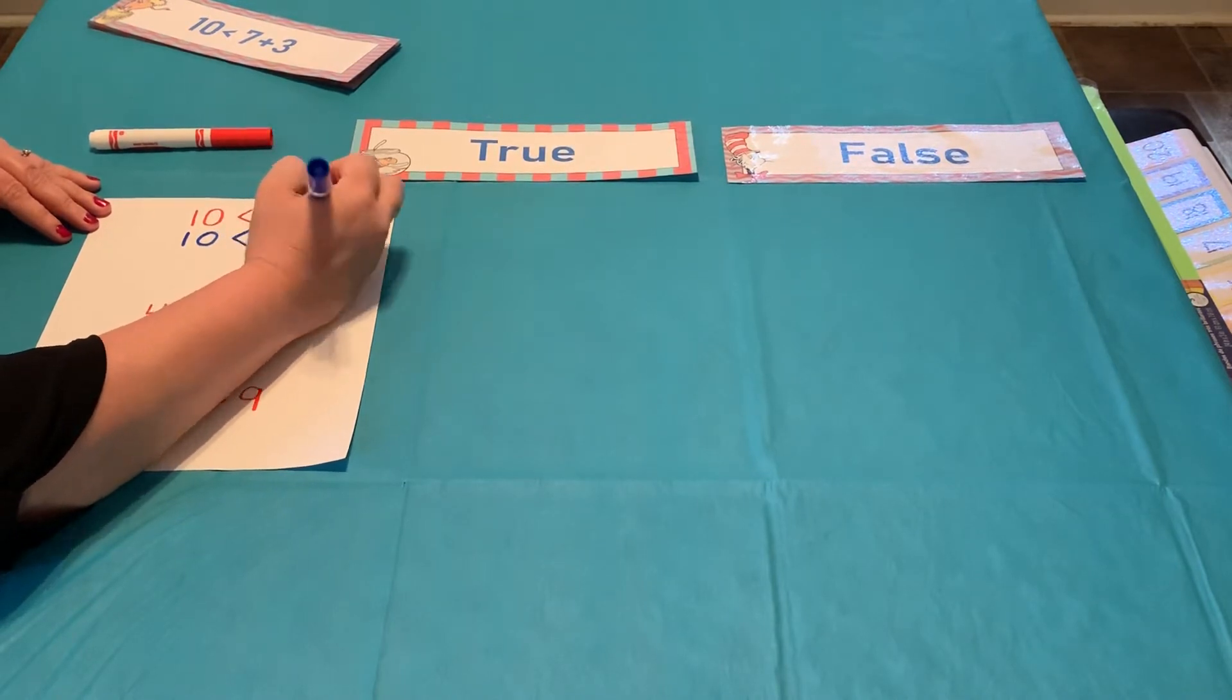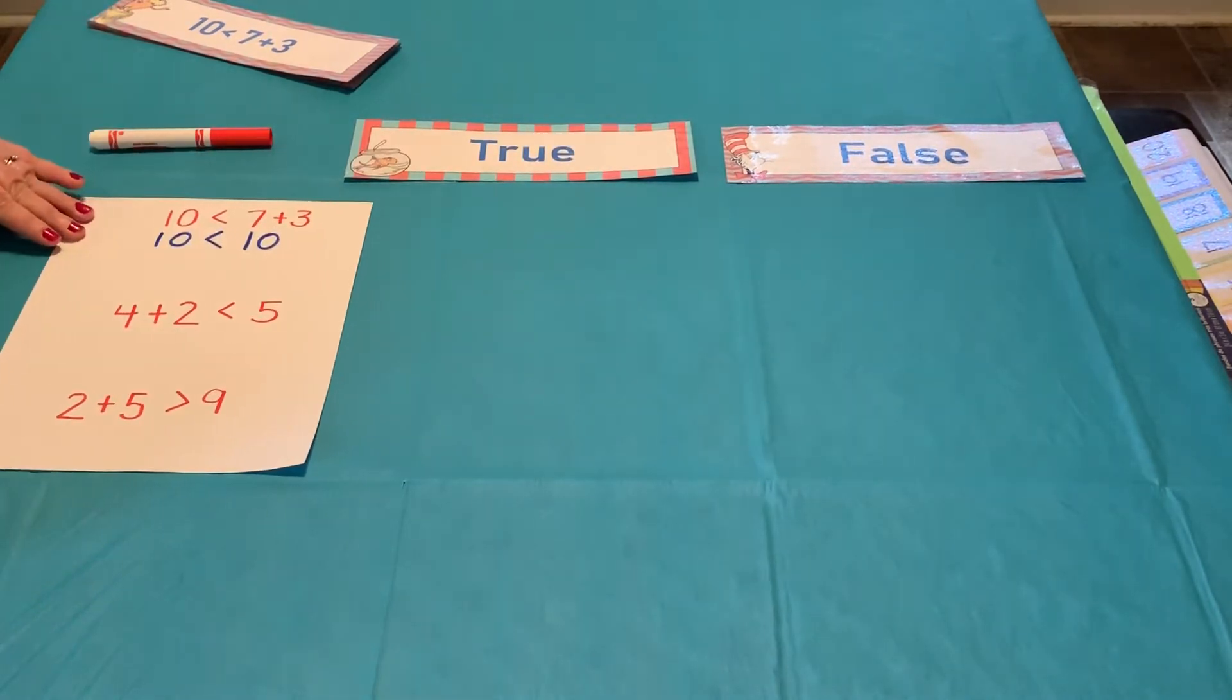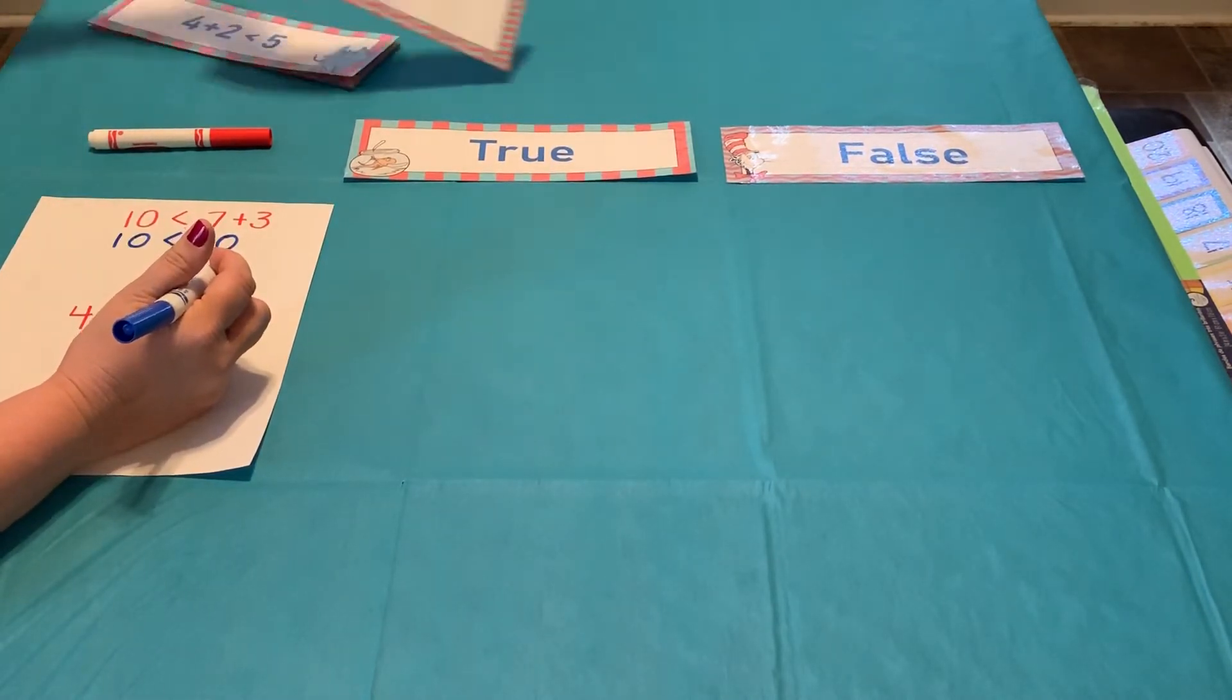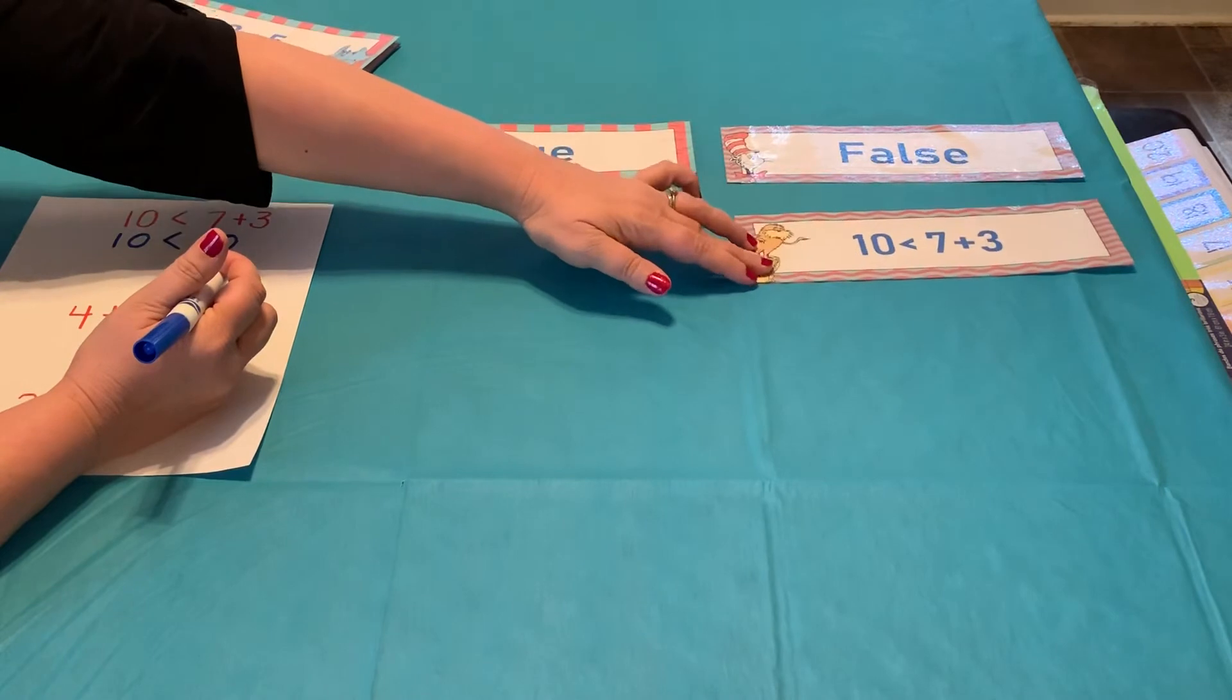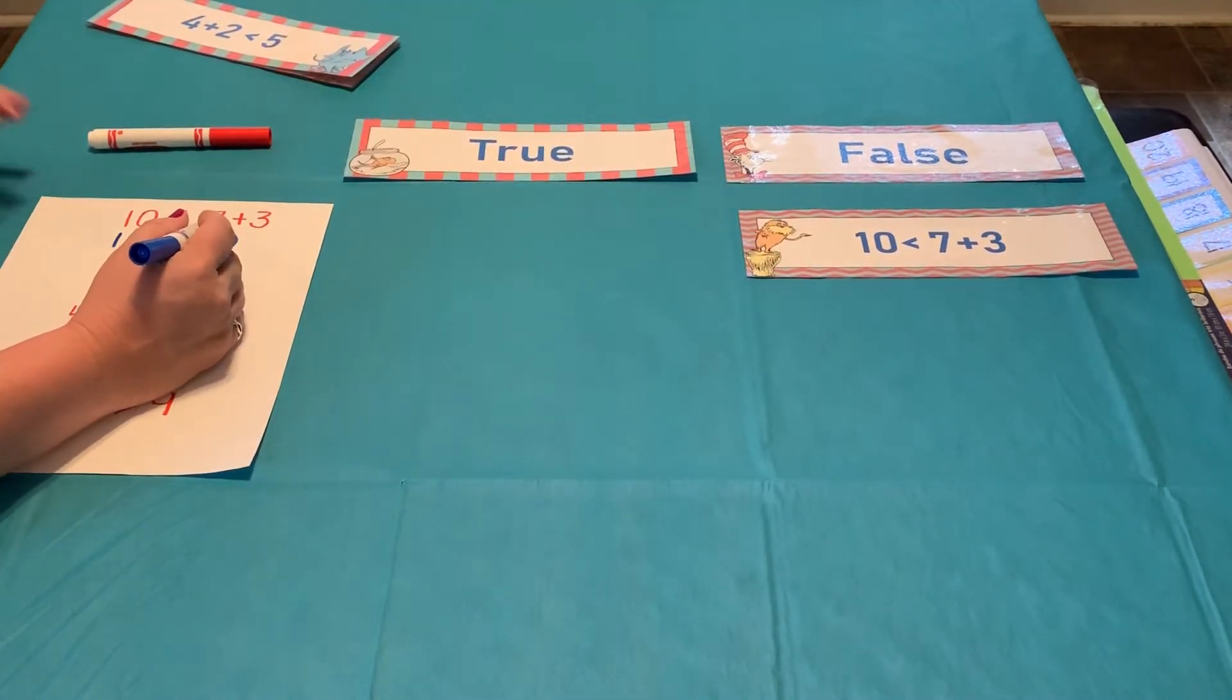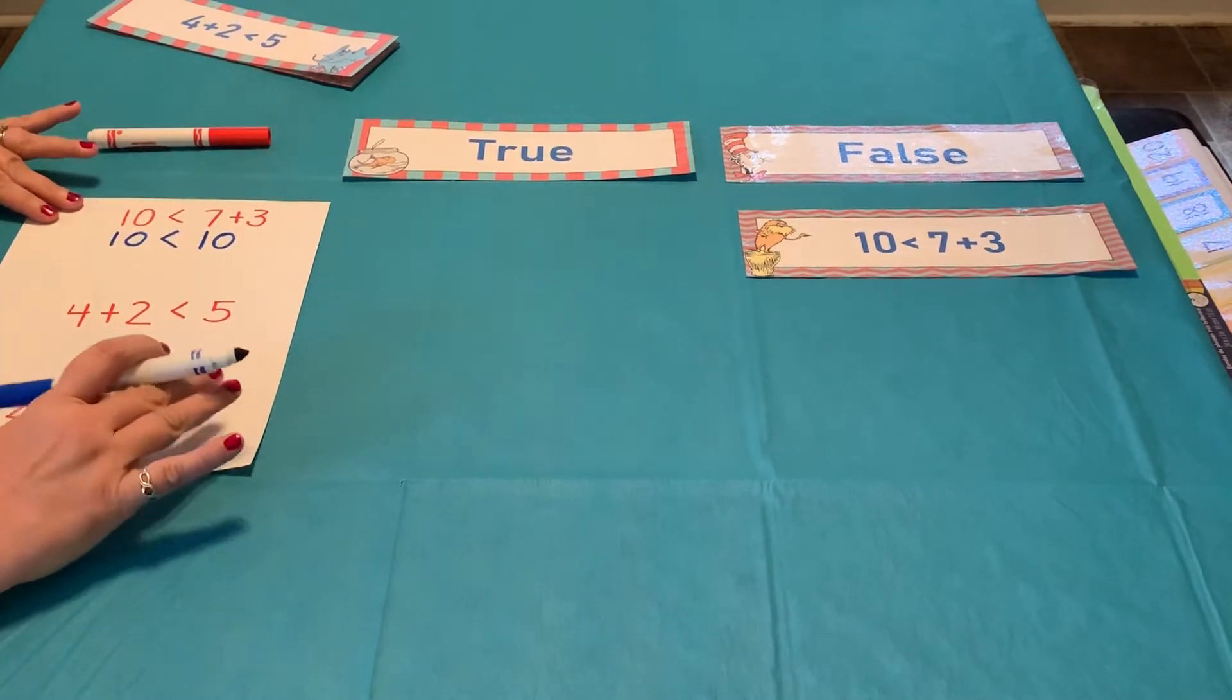So, is that true? 10 is less than 10? Absolutely not. It is false because this one here would be 10 is equal to 10. That would be the true statement. So, that statement is false.